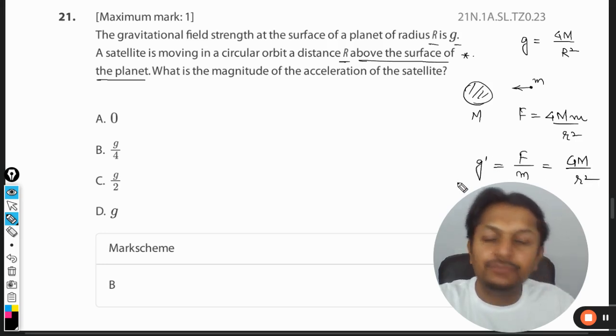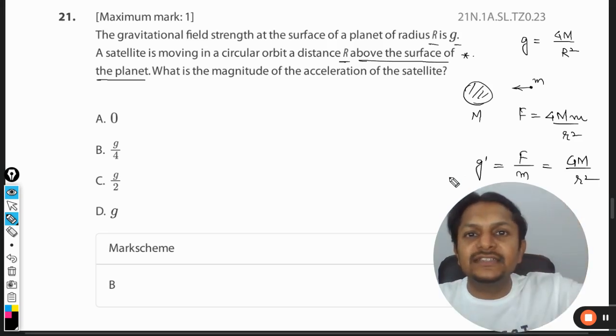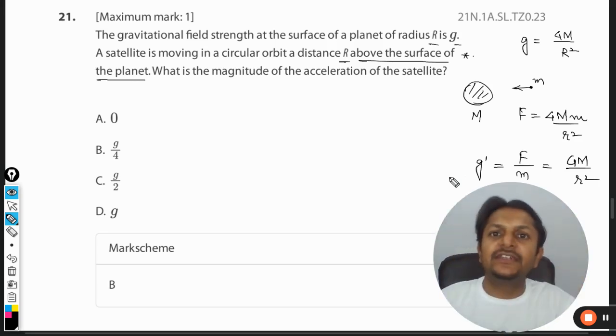This is coming out to be GM by r square. So this is, I am just calling it g dash. G dash is the acceleration due to gravity at a distance small r from the center of the earth, which will be bigger than the radius.